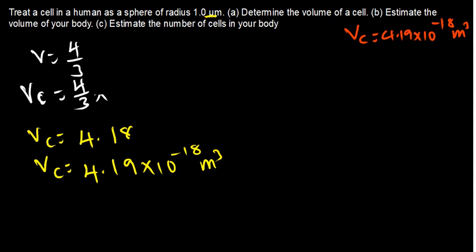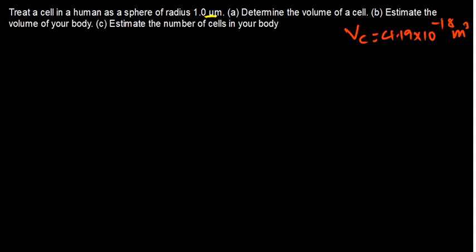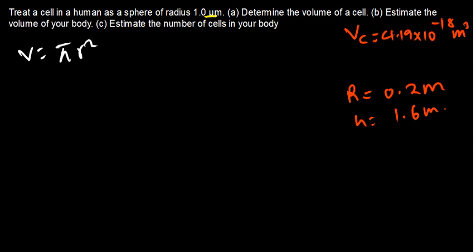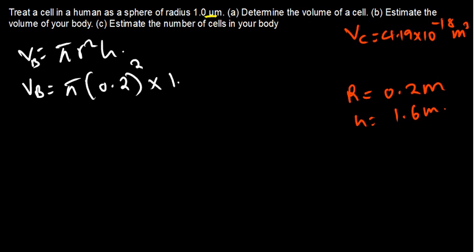Now, part B: we are supposed to estimate the volume of your body. We will assume the radius of the human body is 0.2 meters and the height is 1.6 meters. We are not treating the body as a sphere, but as a cylinder. So the formula is V = π R² × H.